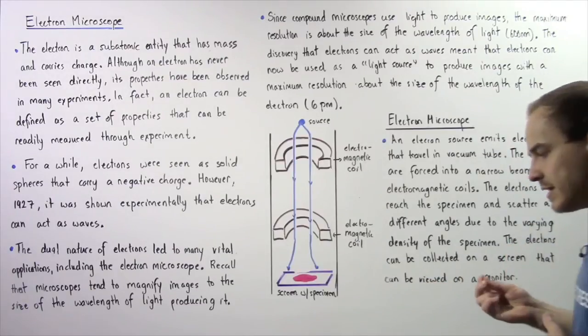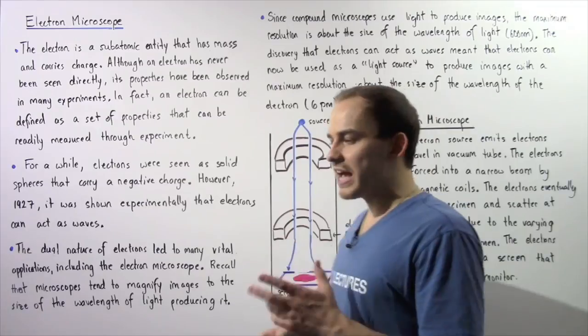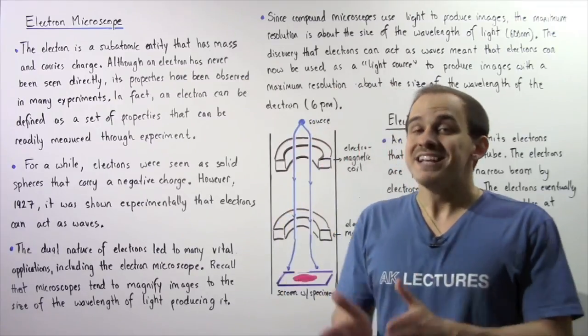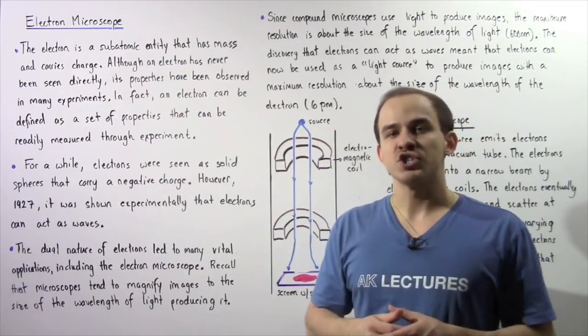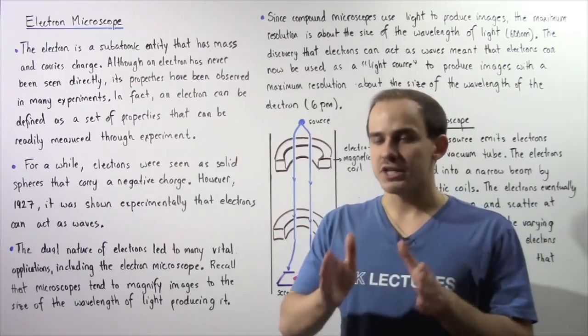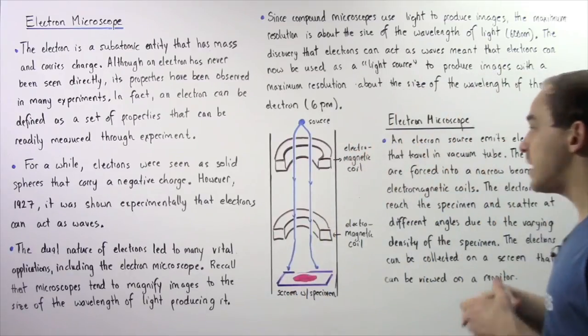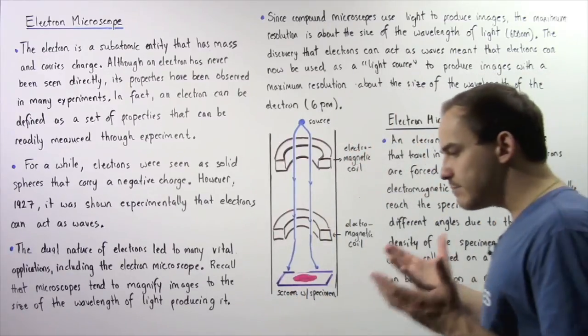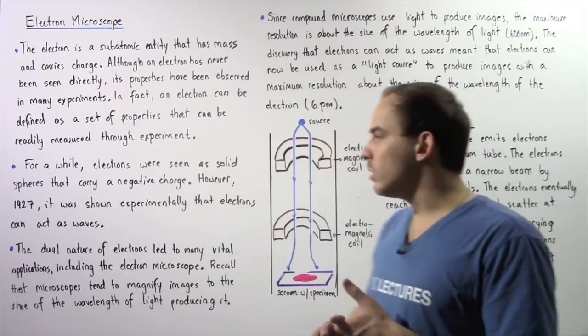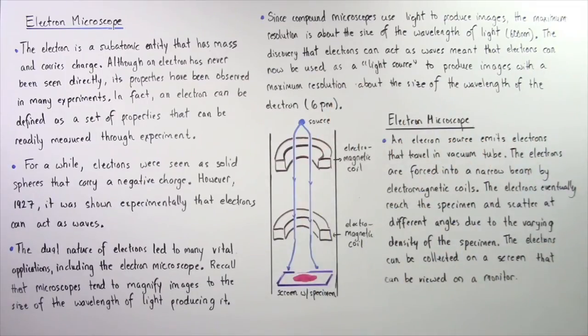Now, generally speaking, there are two types of electron microscopes. We have scanning electron microscopes and transmission electron microscopes. They basically use the same exact principle that will be outlined in the following paragraph.